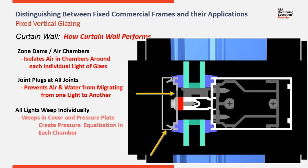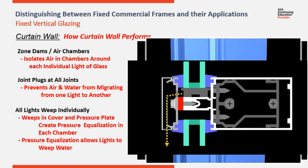At this point, we have isolated each light of glass. To weep the elevation, each light of glass has to have two weep holes in the pressure plate and the cover. These weeps allow air on the exterior to meet the air in the chamber around each light of glass. This connection creates pressure equalization. Because the air pressure between these two areas is balanced, water in the system easily flows out to the exterior.